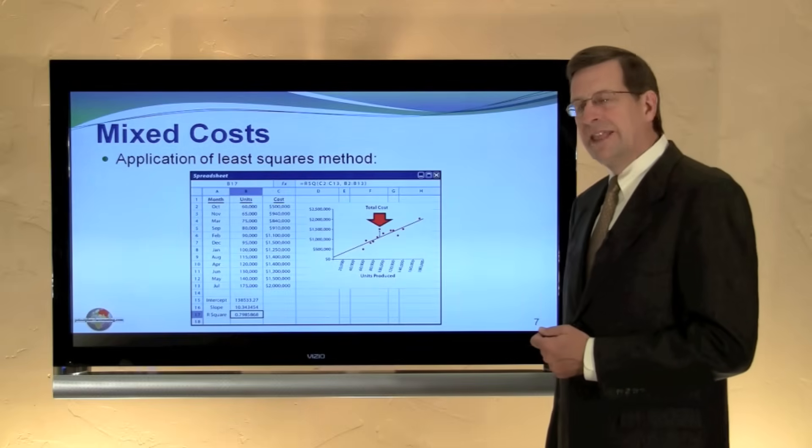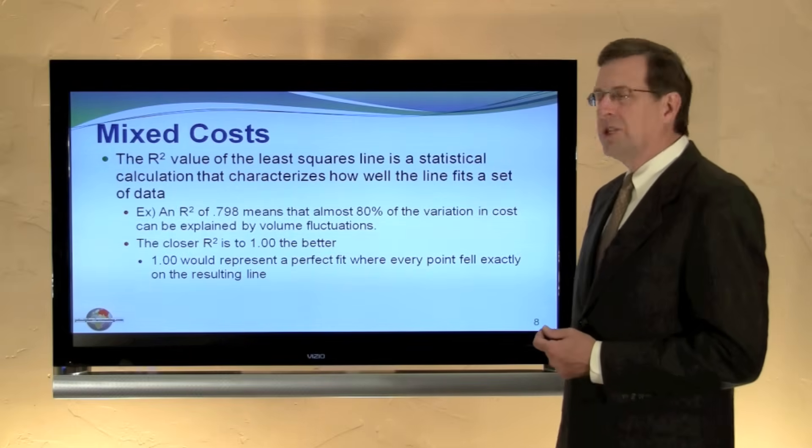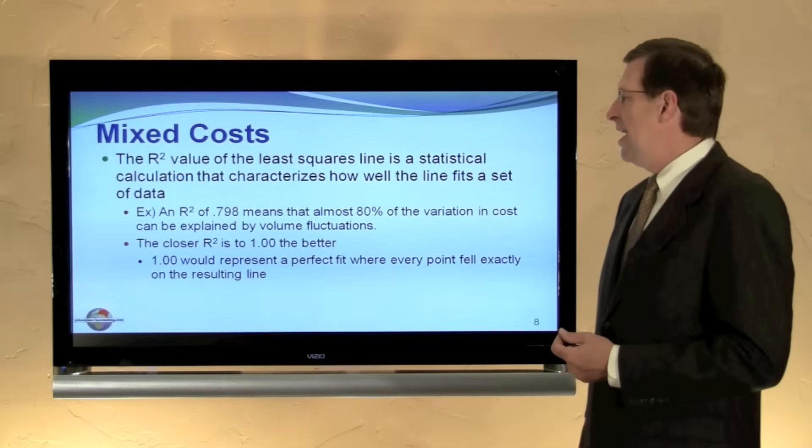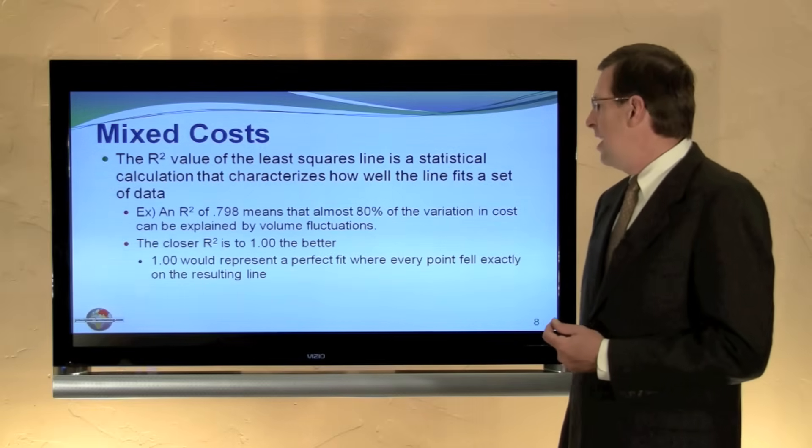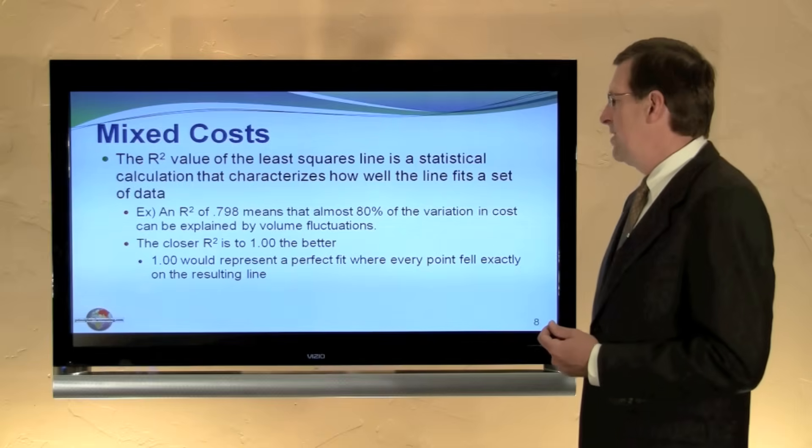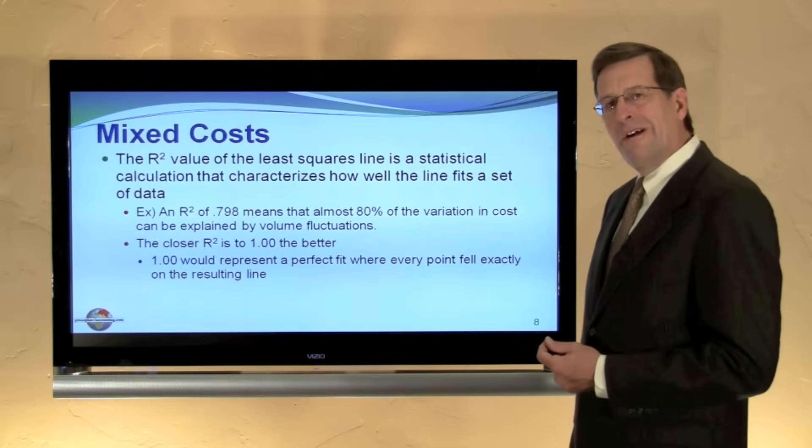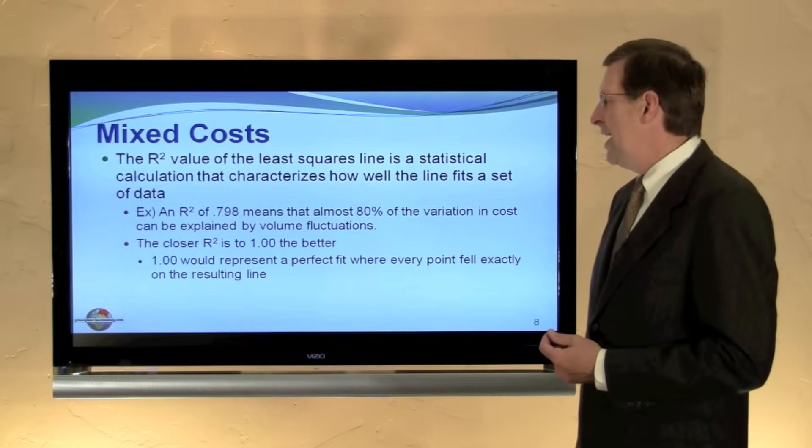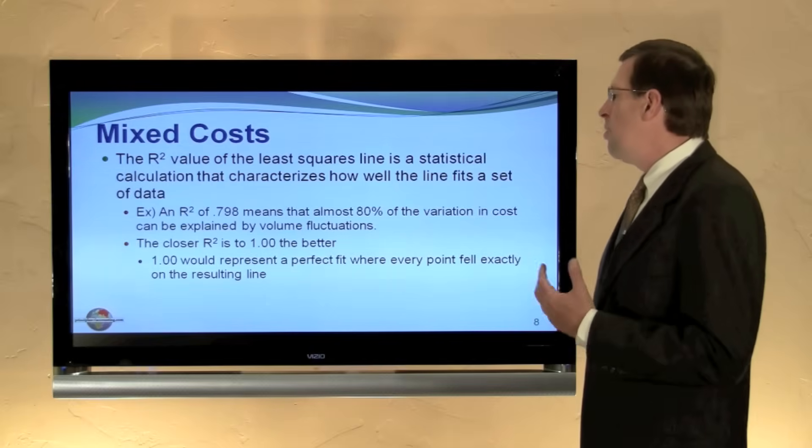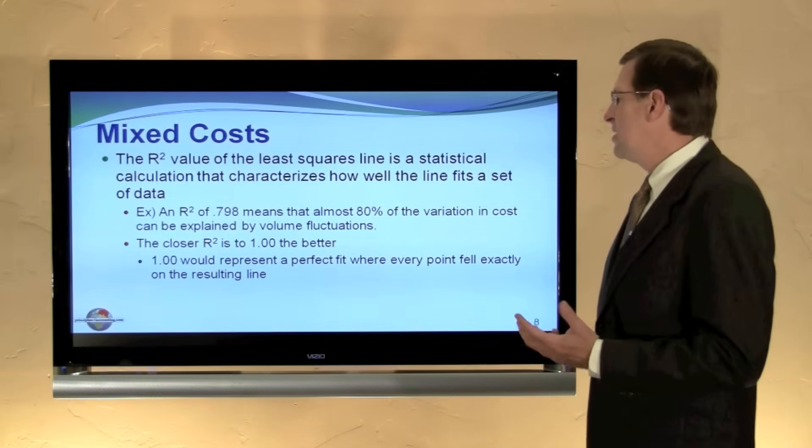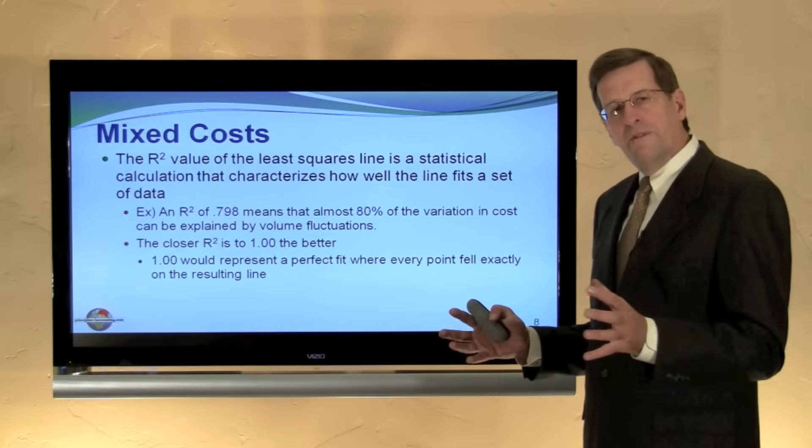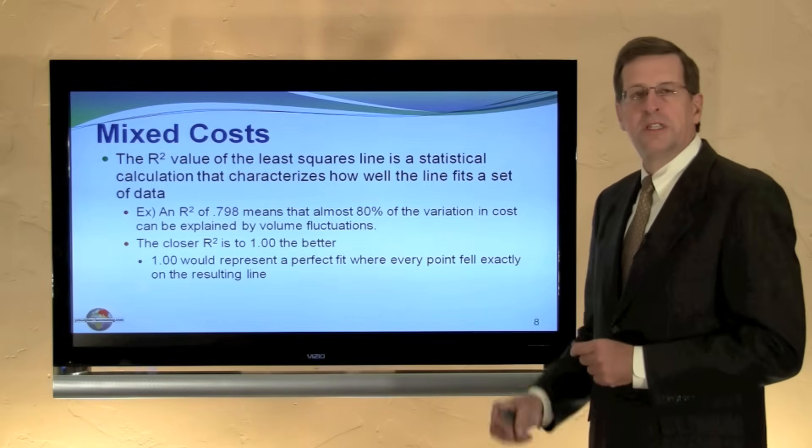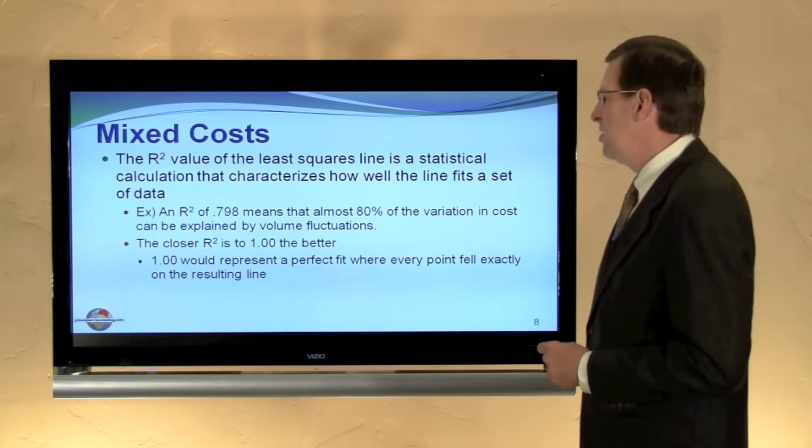Let's finally close by thinking about that R-squared value. The R-squared value of the least squares line is a statistical calculation that characterizes how well the line fits to a particular set of data. In our example, we saw an R-squared value of 0.798. That simply means that almost 80% of the variation can be explained by volume fluctuations. The outliers are fairly small, or in other words, the points are fairly tightly clustered to the line.